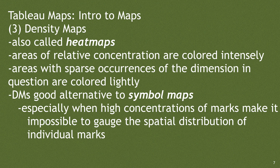And then, number three: density maps, also called heat maps. Areas of relative concentration are colored intensely, while areas with sparse occurrences of the dimension in question are colored lightly. More intense means concentrated; less intense means sparsely concentrated. Density maps are a really good alternative to symbol maps, especially when you have a high concentration of marks, making it possible to gauge the spatial distribution of individual marks.